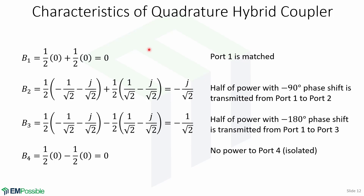Plugging the transmission and reflection coefficients into our expressions for the waves emerging from each port: B1 equals 0, meaning port 1 is matched. B2 equals minus J over square root of 2, meaning half the power with a minus 90-degree phase shift is transmitted from port 1 to port 2. B3 equals minus 1 over square root of 2, meaning half the power with a minus 180-degree phase shift is transmitted from port 1 to port 3. And B4 equals 0, meaning no power is transmitted to port 4, the isolated port.